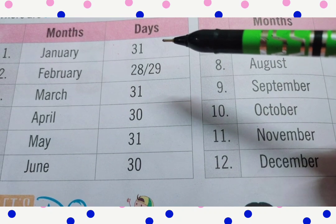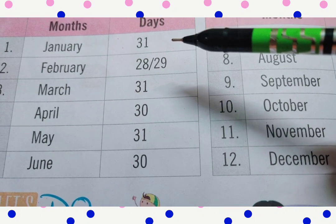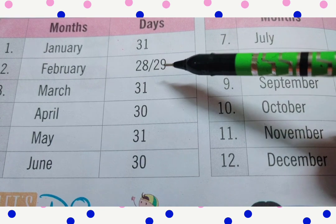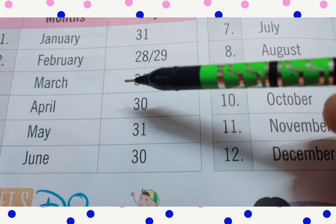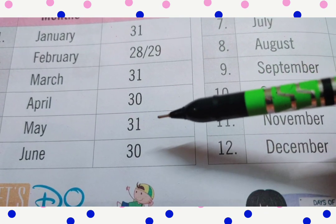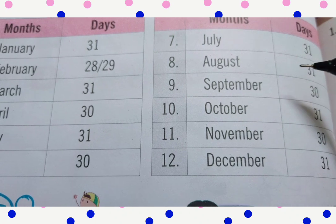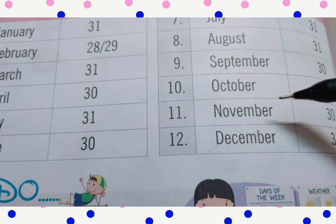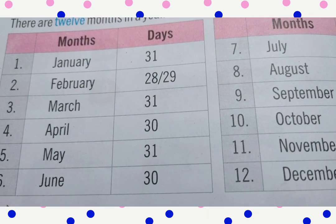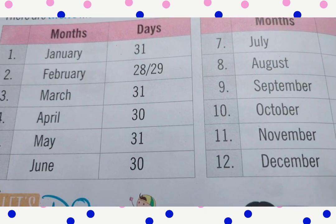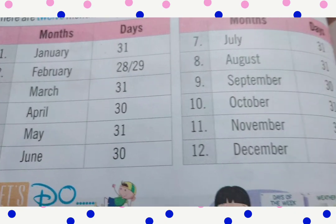Each month has different numbers of days. January has 31 days, February has 28 or 29 days, March has 31 days, April has 30 days, May has 31 days, June has 30 days, July has 31 days, August has 31 days, September has 30 days, October has 31 days, November has 30 days, and December has 31 days.